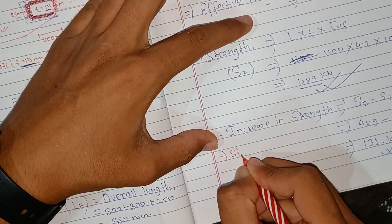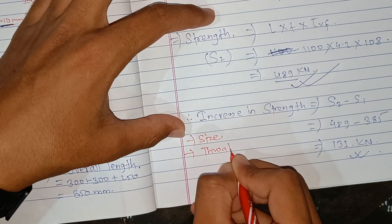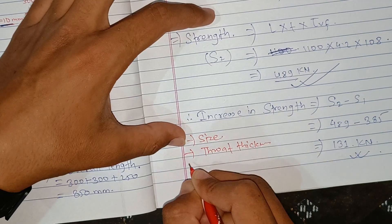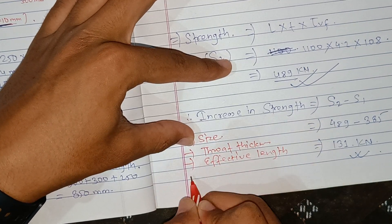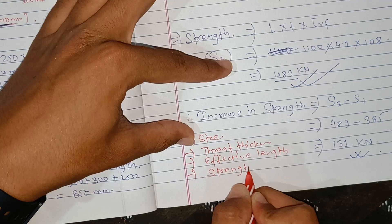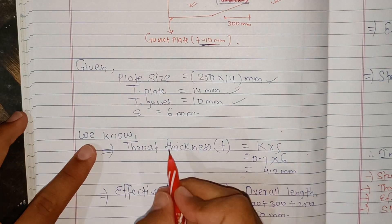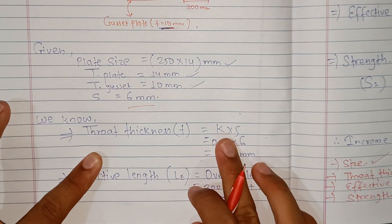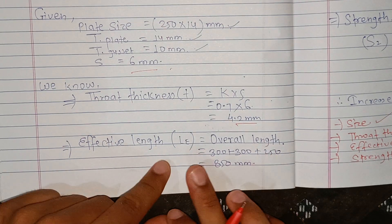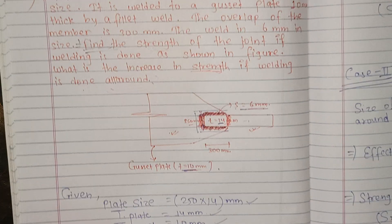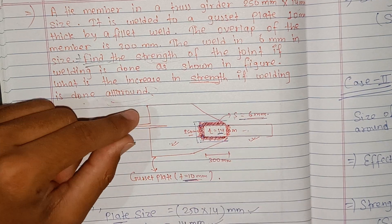To summarize: first, the size is given; then the thickness of the plate and gusset plate are noted. Stepwise: size is 6 mm, throat thickness = 0.7 × 6 = 4.2 mm, effective length is calculated from overall length for fillet weld, and the overall length for three sides is 850 mm.